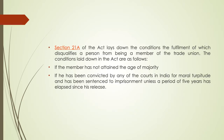Section 21A of the act lays down the conditions the fulfilment of which disqualifies a person from being a member of the trade union. The conditions are: first, if the member has not attained the age of majority; second, if he has been convicted by any court in India for moral turpitude and has been sentenced to imprisonment, unless the period of 5 years has elapsed since his release.